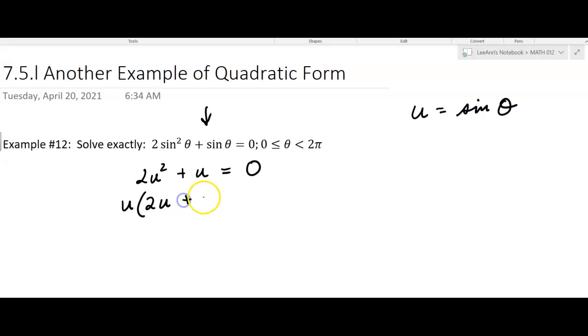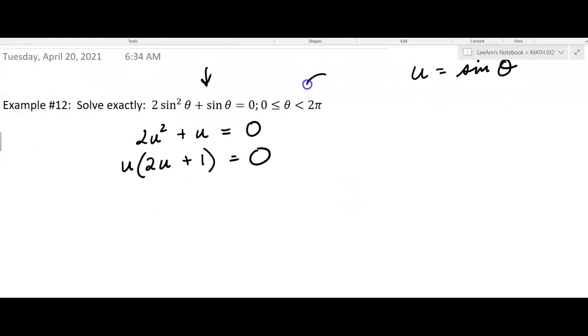So I'm factoring out a u. It's set to zero, so that's good. And by the way, this is over an interval of zero to two pi, including zero but not the two pi. So this is a good example. We're going to talk about that a little bit more. So we get u equals zero, or two u plus one equals zero. If you're solving the equation for u, sometimes it's easier to do that before you put the substitution back in.